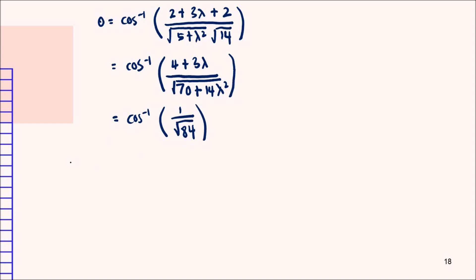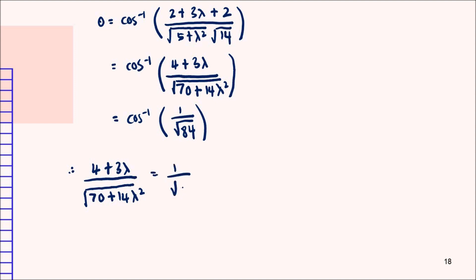Therefore, we compare and equate: (4 + 3λ) divided by √(70 + 14λ²) equals 1 over √84. We then take the squaring of both sides of this equation.